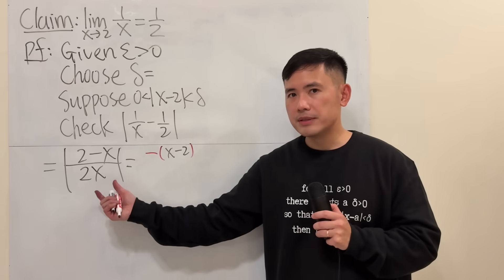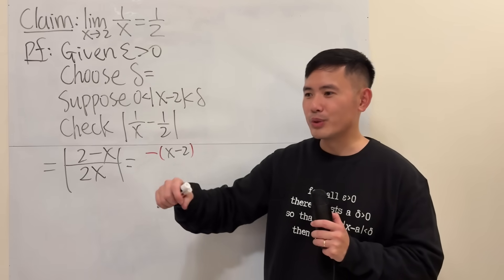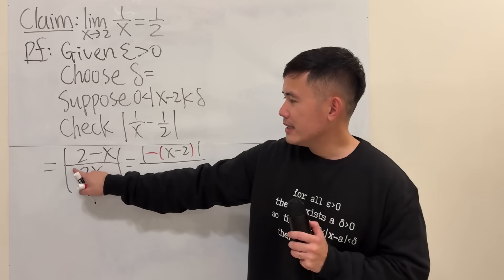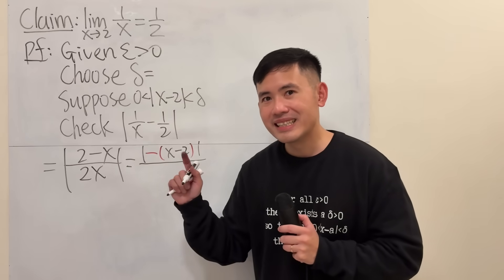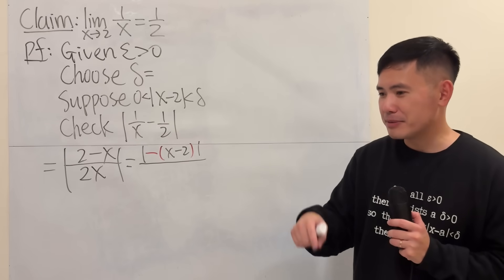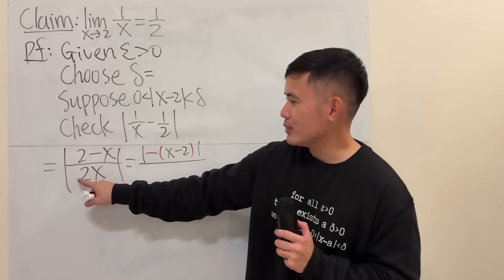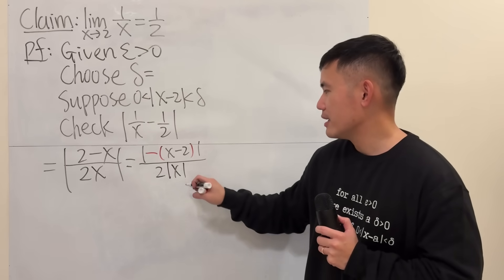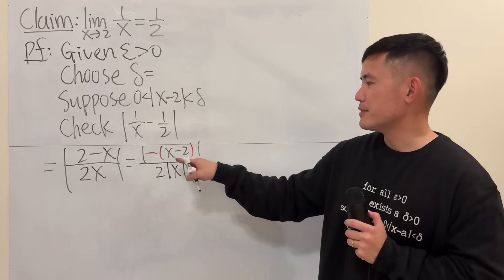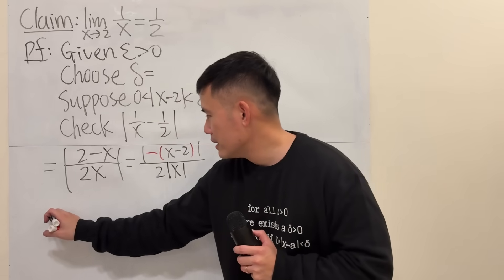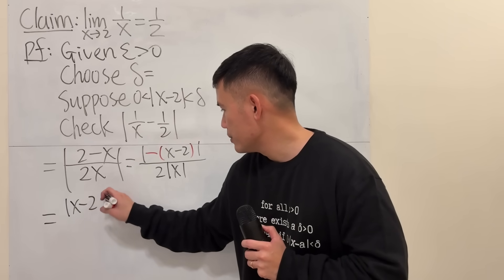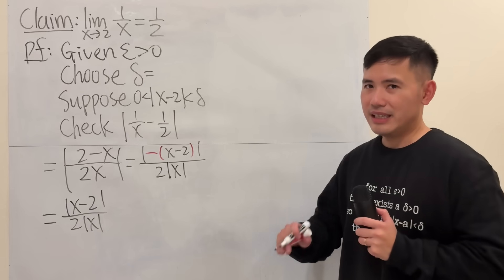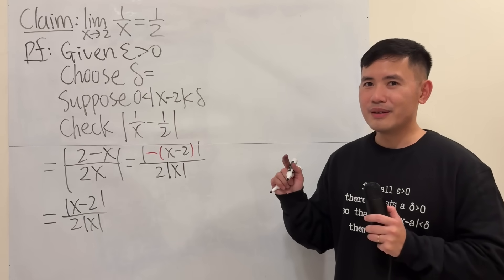The absolute value of a quotient is the quotient of the absolute values, so I apply the absolute value to numerator and denominator. The absolute value of a product is the product of absolute values, so absolute value of 2 is just 2, and the negative sign inside the absolute value doesn't matter. This gives us absolute value of x minus 2 over 2 times absolute value of x.